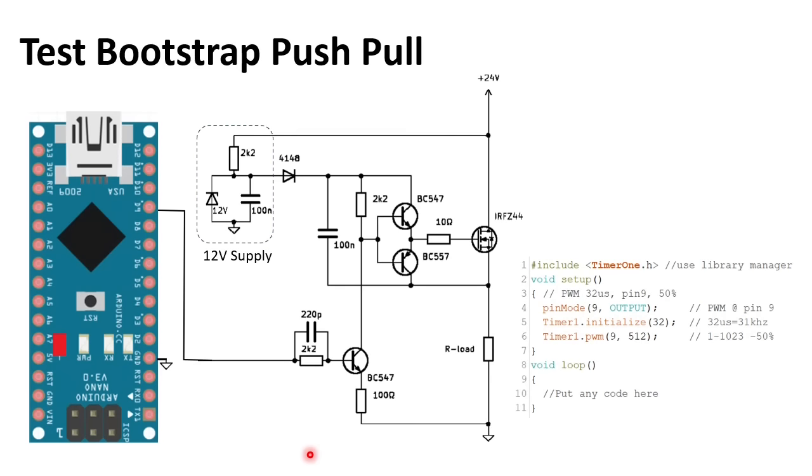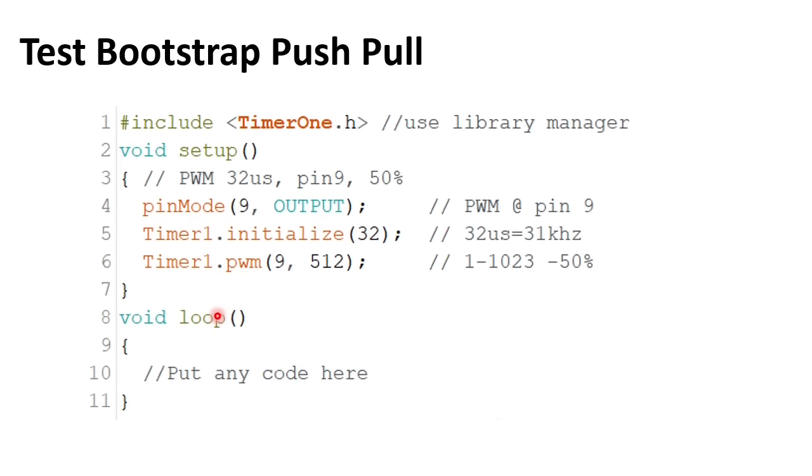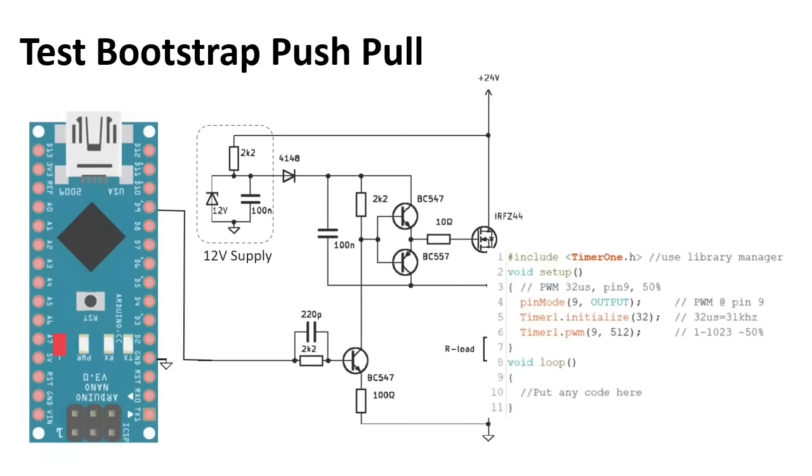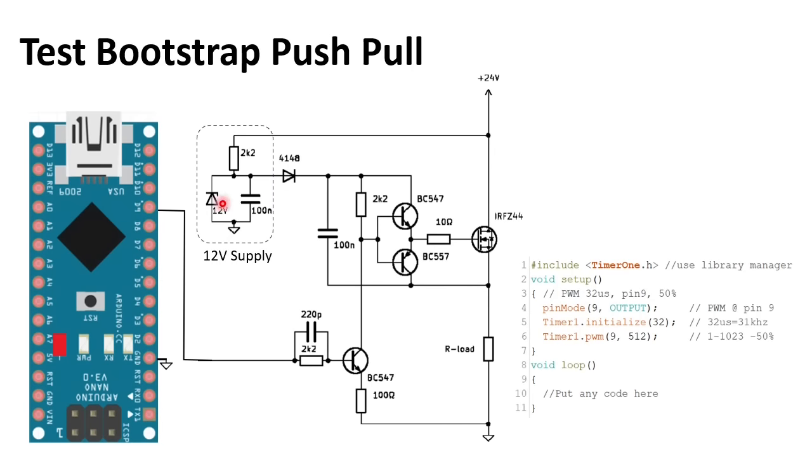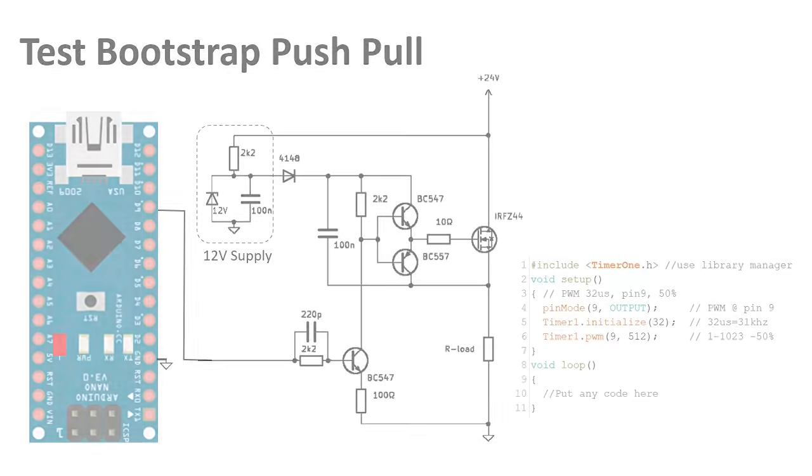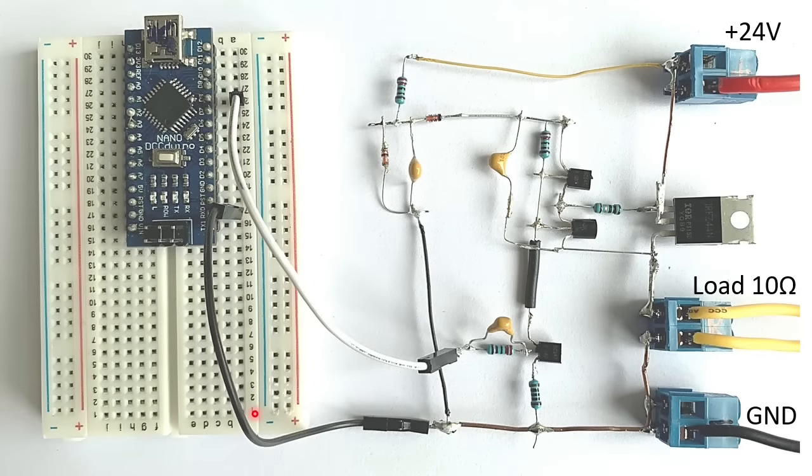This is the circuit I built. The signal comes from an Arduino using this code to generate a 31 kilohertz 50% duty cycle signal. Link to the code is in the description. The 12 volt I make with a 2K2 resistor, a Zener diode and a 100 nanofarad cap. And here is the circuit. Built on the most environmentally friendly PCB material that I could find.